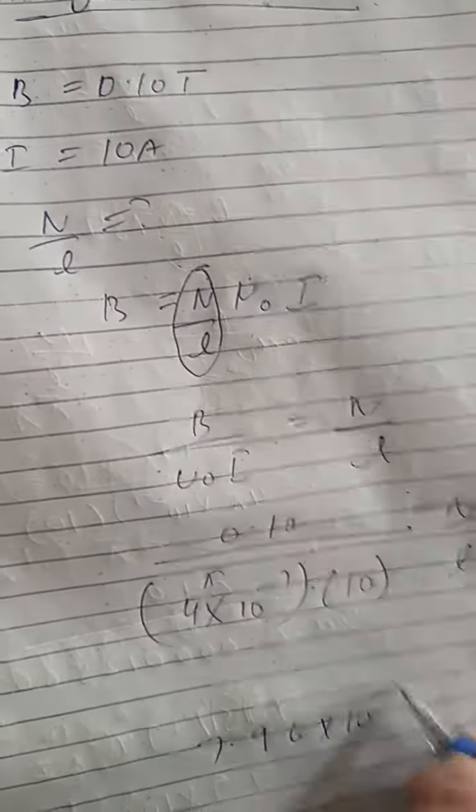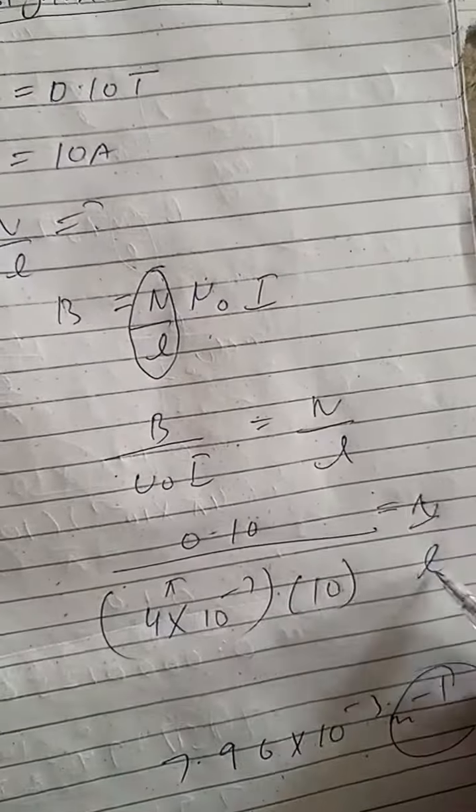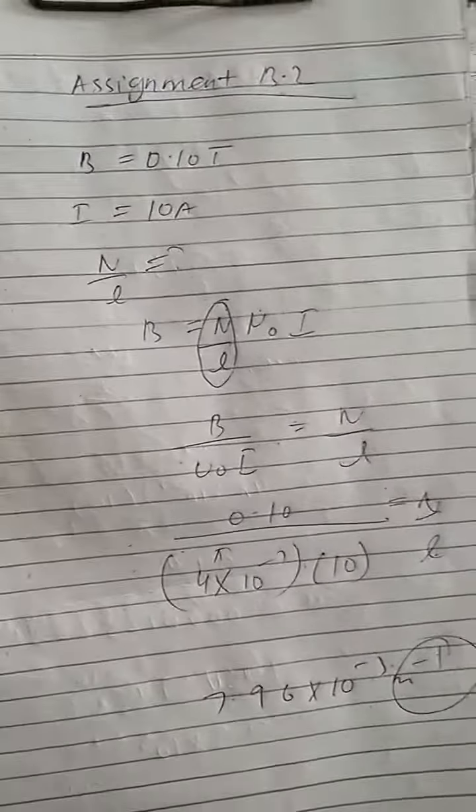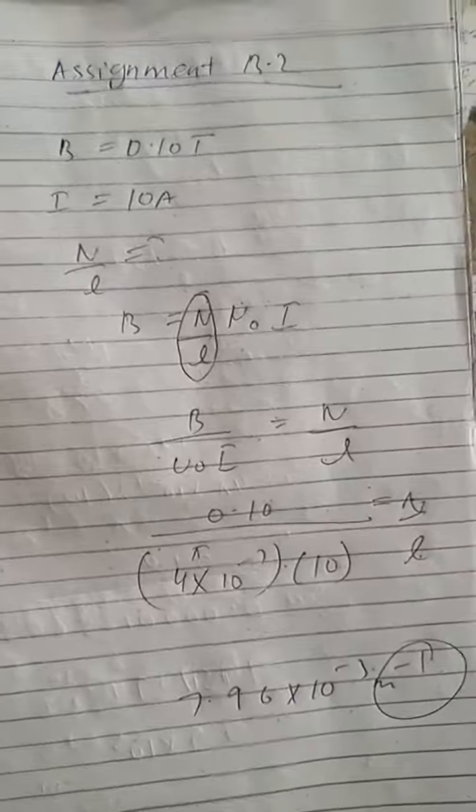And current value 10, so this will be 10 turns per length. My answer came out so this will be Assignment 13.2. Okay.